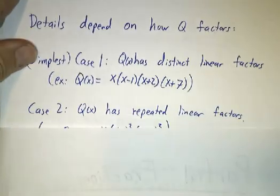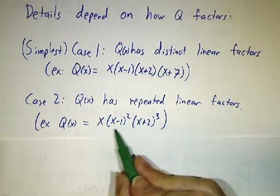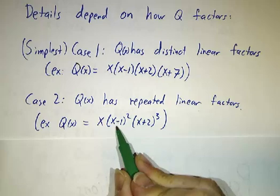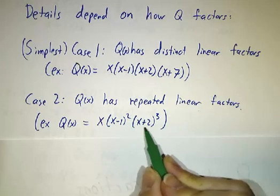The next simplest case, which we're also going to talk about in this video, is when they're all linear roots, no complex roots, they're all real roots, but you have a double root. You have an x minus 1 squared term or an x plus 2 cubed term.